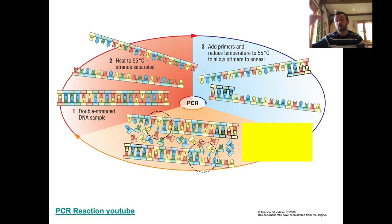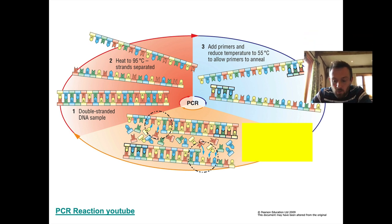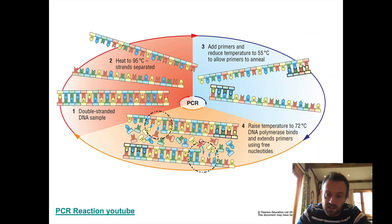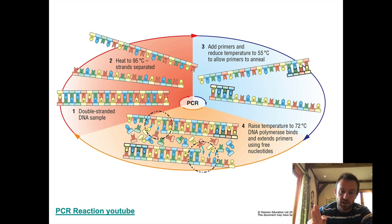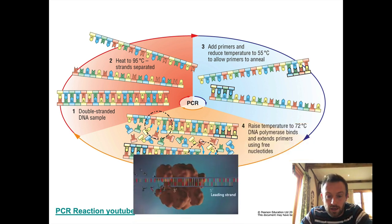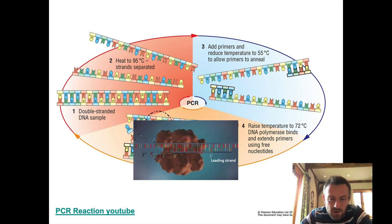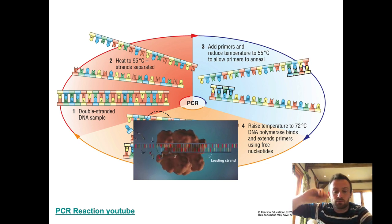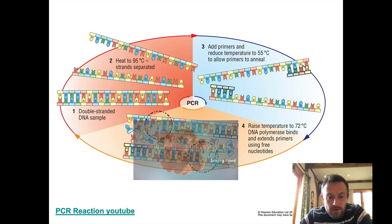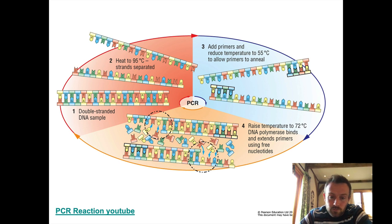We purposely design the primers so that they attach to the opposite ends of the part of the DNA we want to copy. Once the primers are annealed, we raise the temperature again to 72°C. This is when a DNA polymerase enzyme binds and adds free nucleotides to the single strand of DNA to form two double-stranded pieces of DNA. The polymerase enzyme makes the phosphodiester bonds as it goes, while hydrogen bonds between nucleotides form spontaneously at lower temperatures.